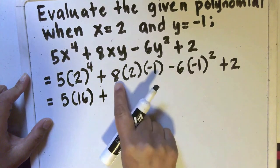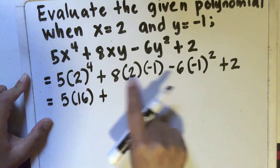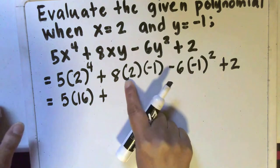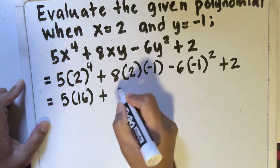Here, we can just simply multiply these 3 numbers. 8 times 2 is 16, times negative 1. So that's going to be positive 16 times negative 1, that will be negative 16.